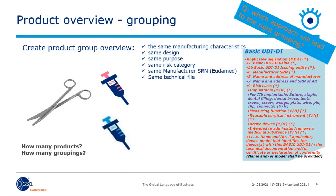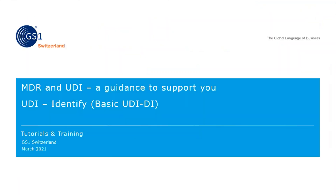Let's move on to the grouping of your products. The main question at this point is to create a grouping of your devices and products. A little help are the following questions: Do the devices have the same characteristics, same design, same use or application, same risk class, same SRN, manufacturing SRN in Eudamed? This was a short tutorial about the basic UDI-DI. I hope you enjoyed it. There are more tutorials about UDI — check out our homepage. Stay tuned and thank you very much.